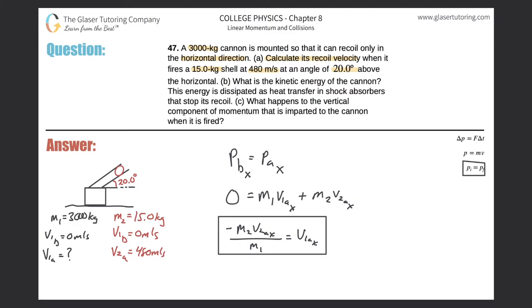So now we just need to figure out, can we plug in these values? Do we know M2? Yes, we do. 15. Do we know M1? Yes, we do. 3000. And do we know V2Ax? Well, not exactly. I know V2A. We know this vector.